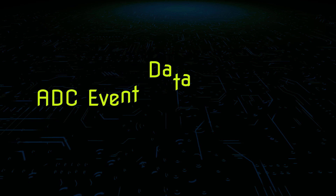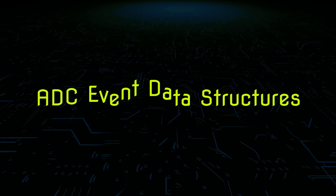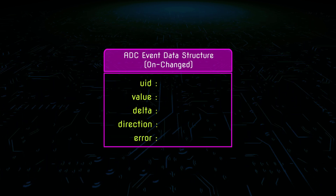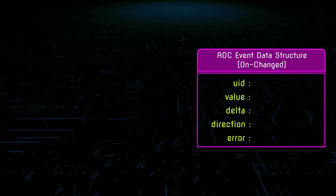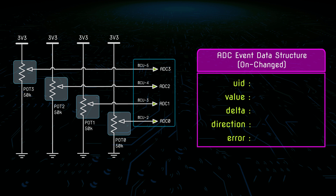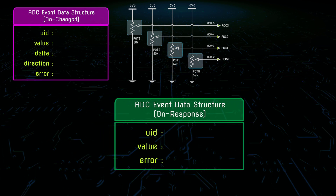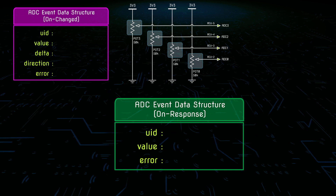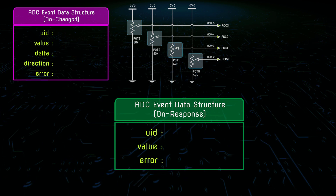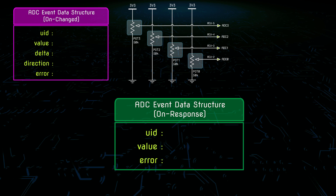Before moving into the programming section, let's understand the event data structure of the ADC. There are two types of event data structure. The first is the onChanges data structure, which will be sent to our application when the MCU detects a change in voltage at the potentiometer. The second is the simple data structure used for a normal request — when you want to know the value of the ADC, you make a request to the CPU and wait for the response data.